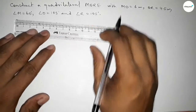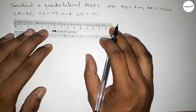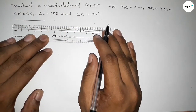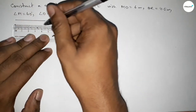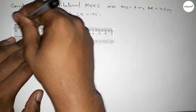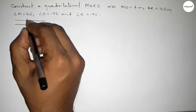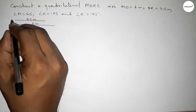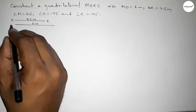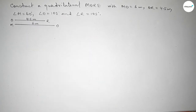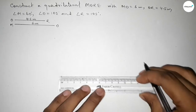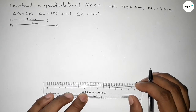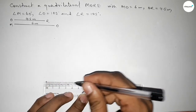First of all we have to draw the two given lines. The first one is 4.5 centimeter and another line of length 6 centimeter. So this line is OR equal to 4.5 centimeter and this one is MO equal to 6 centimeter.